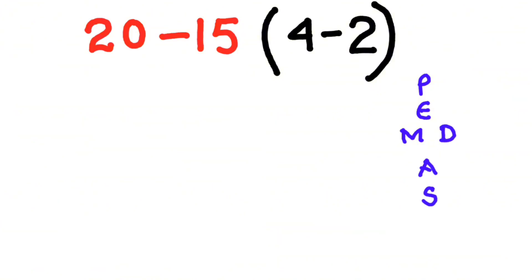According to the PEMDAS rule, first parentheses should be solved. So 4 minus 2 equals 2, and we keep 20 minus 15 as it is. In the center there's no sign, so we put multiplication.